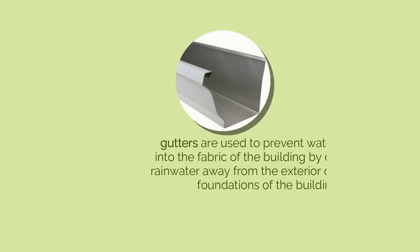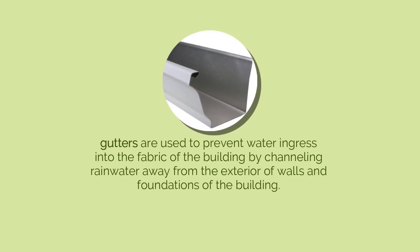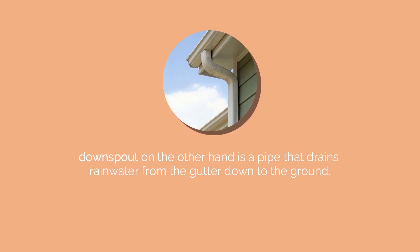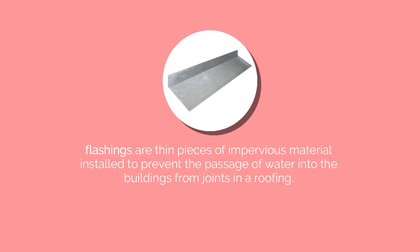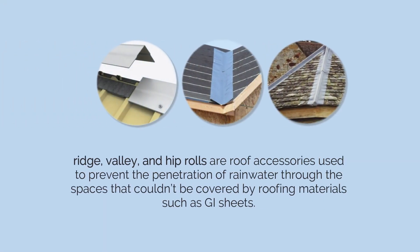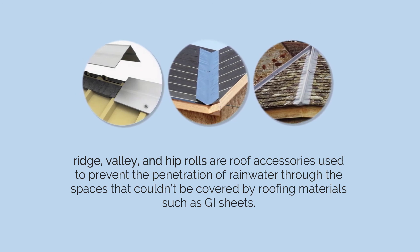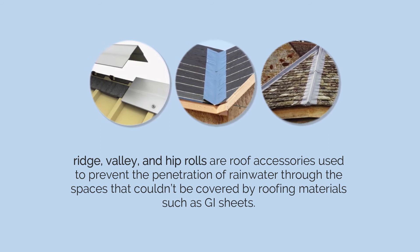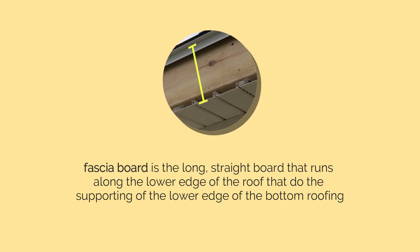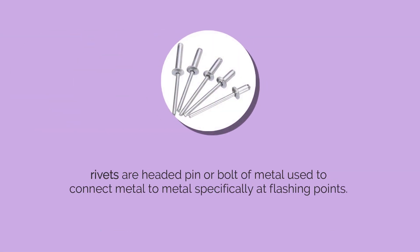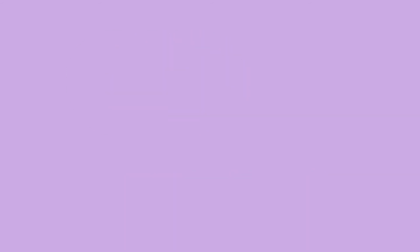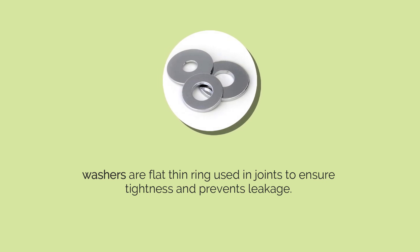After learning the different roofing materials, let's proceed to roofing accessories. Gutters prevent water ingress by channeling rainwater away from exterior walls and foundations. Downspouts are pipes that drain rainwater from the gutter down to the ground. Flashings are thin pieces of impervious material installed to prevent water passage through joints in a roofing. The ridge, valley, and hip rolls are roof accessories used to prevent rainwater penetration through spaces not covered by roofing materials. The fascia board runs along the lower edge of the roof, the soffit is the underside of an architectural structure, rivets are heated pins used to connect metal to metal at flashing points, and washers are flat thin rings used in joints to ensure tightness and prevent leakage.